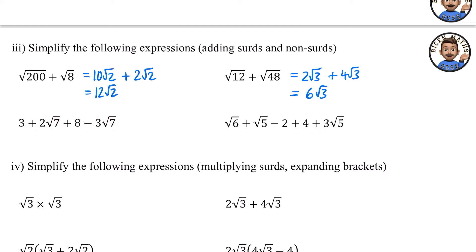For expressions mixing integers and surd terms, add the integer parts separately from the surd parts. For example: (3 + 2√7) + (8 − 3√7) gives 3 + 8 = 11 for the integers, and 2√7 − 3√7 = −√7 for the surds. Another example: (4 + √5 − √6) + (−2 + 3√5) gives integers 4 − 2 = 2, surds 1√5 + 3√5 = 4√5, and the √6 just stays as +√6 since it can't be combined.